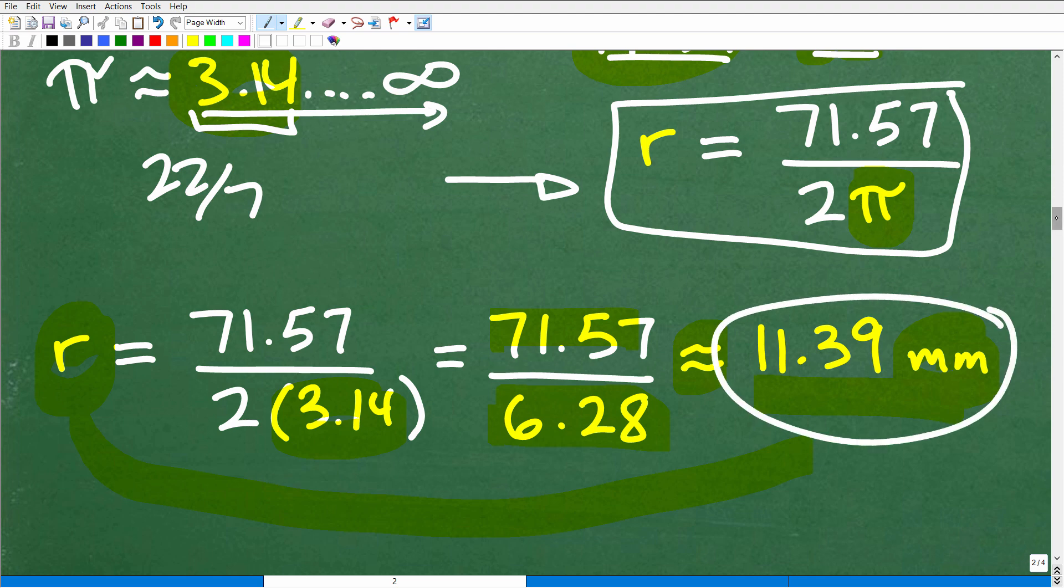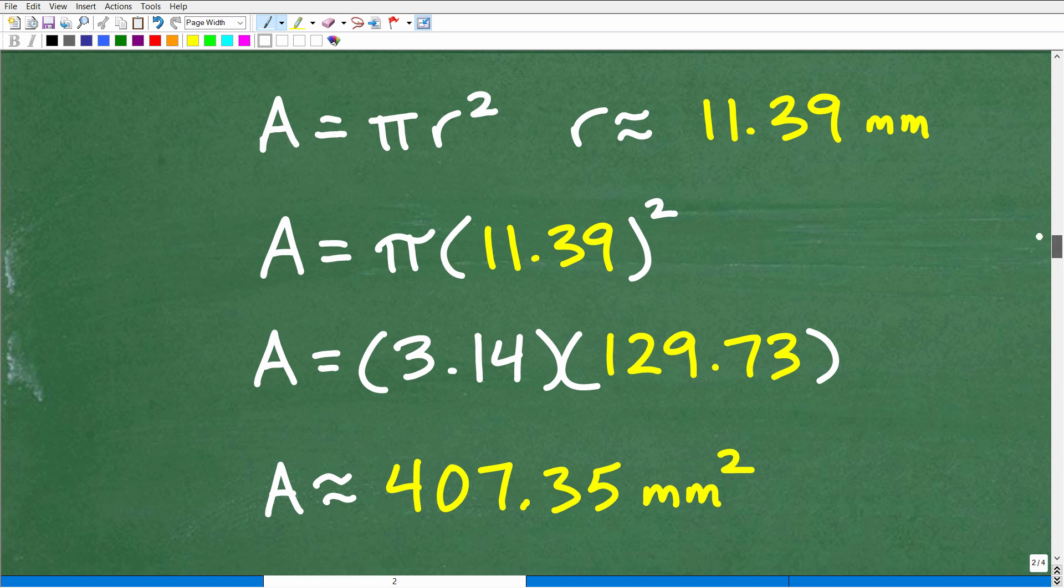Now we have a radius, and finishing this problem is going to be fairly direct. Here is the formula for area of a circle. There is r, that's what we need, and we solved for r. The radius is approximately 11.39 millimeters. Let's plug that in and square it. So πr². Remember, you have to follow the order of operations. This is a very common mistake for students. They'll take π and multiply by this. Remember, you have to do powers first, then multiply by π. So 11.39 squared is 129.73, and we'll use that 3.14 rough approximation for π. We'll multiply π by 11.39 squared, and here is our final approximate answer.